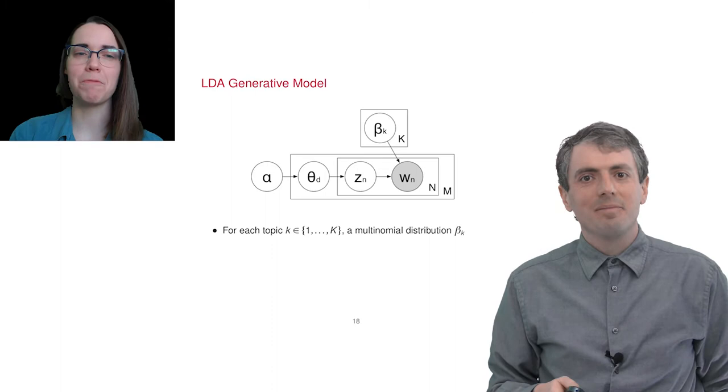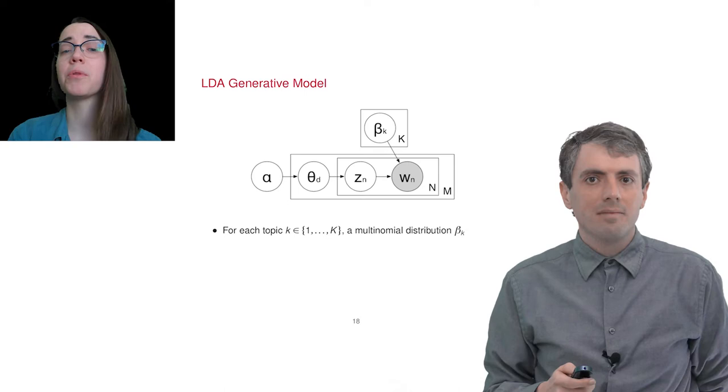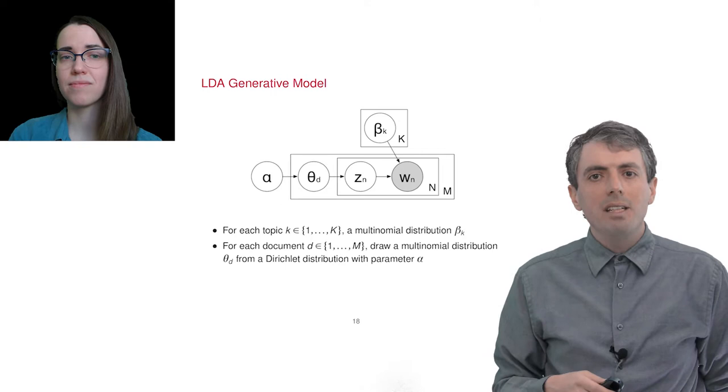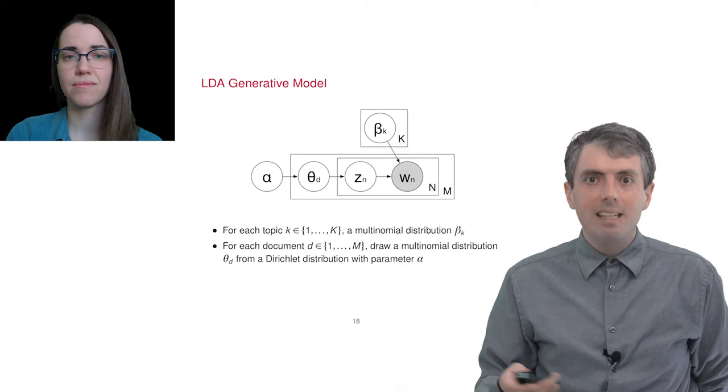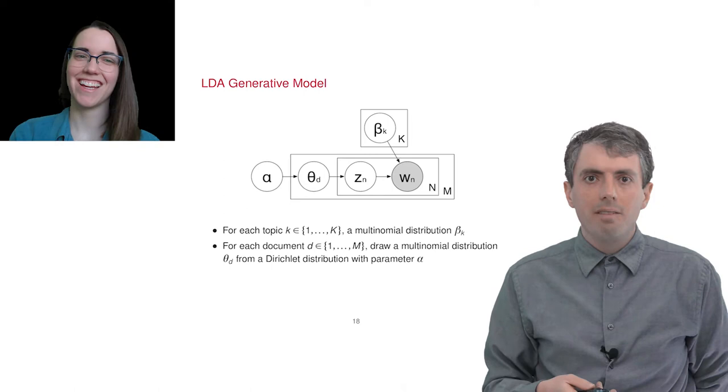You first start out with the joint distribution, which is a product over the documents, in which each document distribution theta over topics is drawn from a Dirichlet distribution parameterized by alpha. The next is simpler. For each token in the document, you draw a topic assignment z from the topic distribution theta. It's just a multinomial distribution.